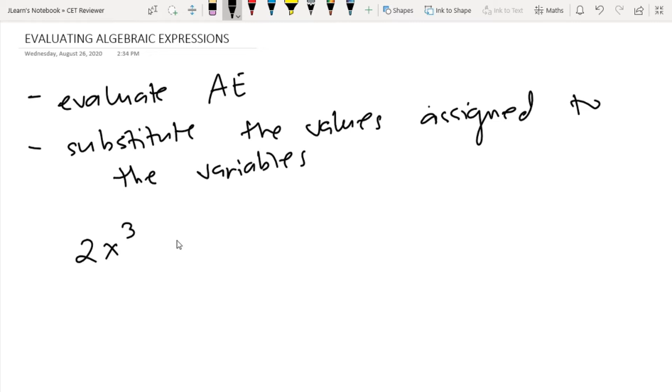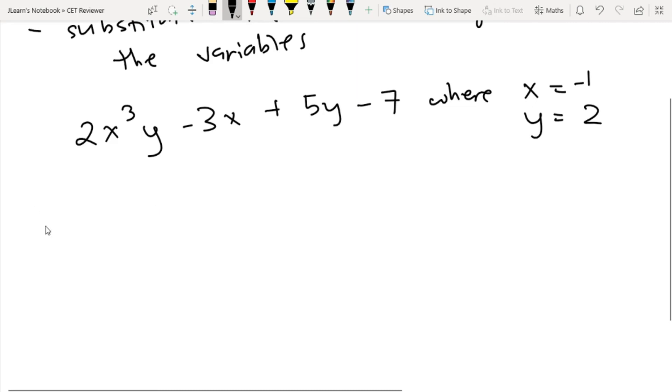For example, we have 2x³y - 3x + 5y - 7 where x is equal to -1 and y is equal to 2. We just substitute the values.